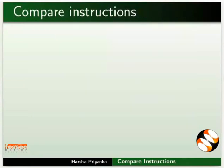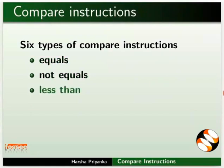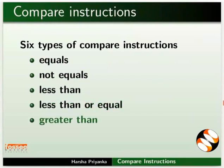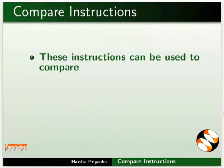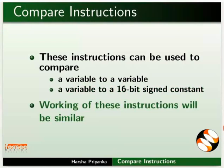In LD Micro, we have six types of Compare Instructions: Equals, Not Equals, Less Than, Less Than or Equal, Greater Than, and Greater Than or Equal. These instructions can be used to compare a variable to another variable, or when we want to compare a variable to a 16-bit signed constant. The working of these Compare Instructions will be similar, but the functioning will be according to their name.